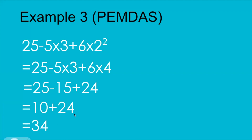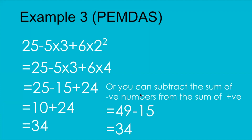When you have addition and subtraction, you can also add all the positive numbers together and all the negative numbers together, then subtract. Here we have two positive numbers, 25 and 24, so add them to get 49, then 49 − 15 = 34. This is an easier approach than strictly going left to right, but it is up to you — whichever way you feel comfortable, you are free to do that.